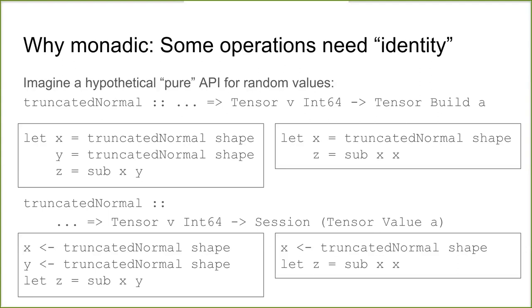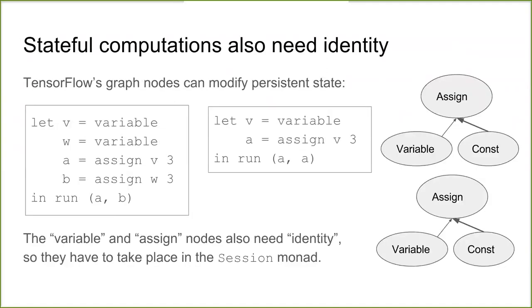This issue isn't unique to randomness — it shows up wherever statefulness occurs. In an audience discussion: TensorFlow marks every kernel with whether or not it's stateful. So at code generation time, we can tell whether we need to protect it with the monadic interface, or whether it's something like subtraction that can just be pure. This distinction matters because Haskell's compiler can optimize things aggressively. Besides random number state, the other main area is variables and stateful operations.